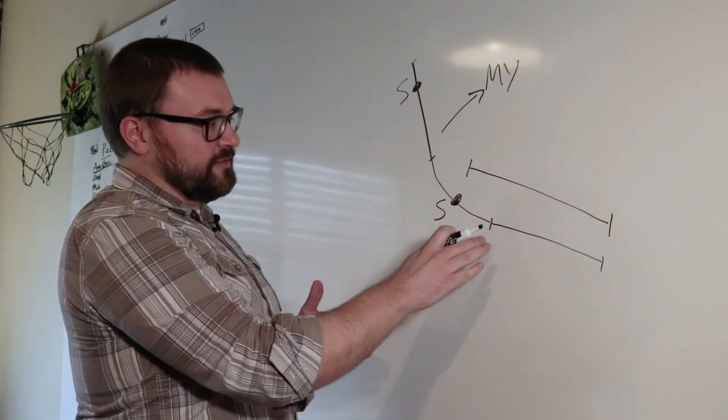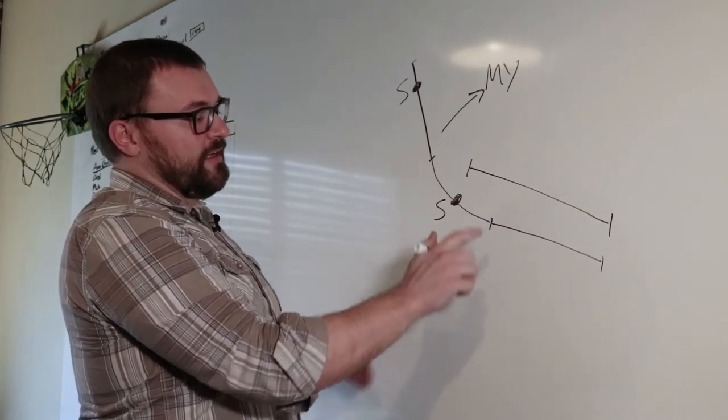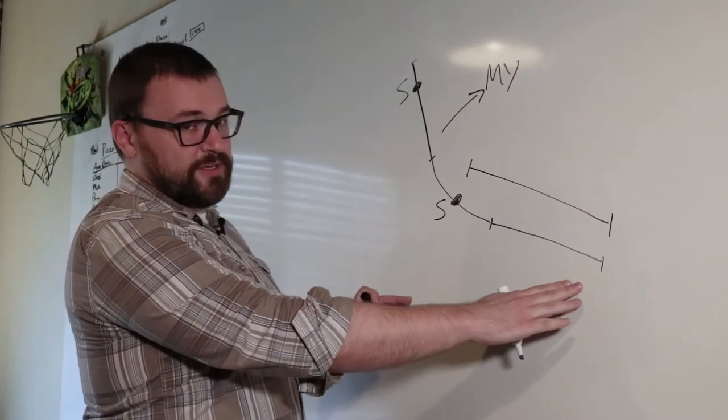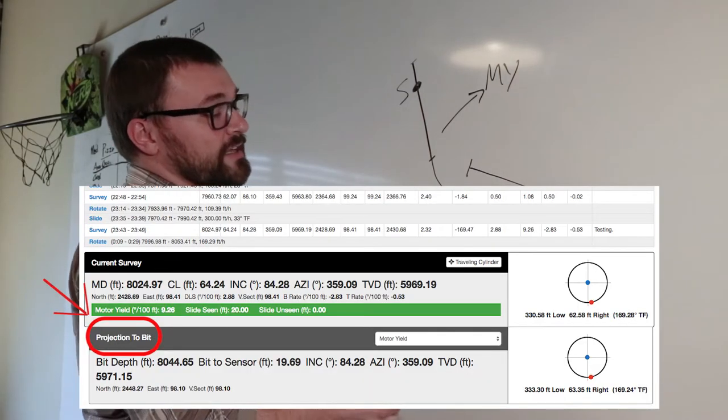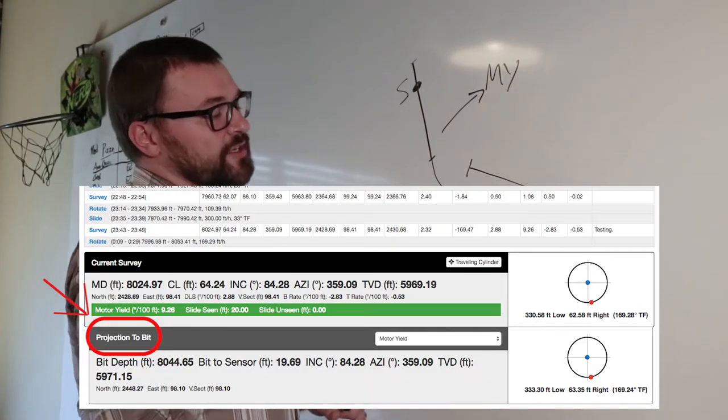We can take all this information and calculate a dogleg for this section right here, and then a projection to the bit. Again, that's more accurate than a straight line projection.